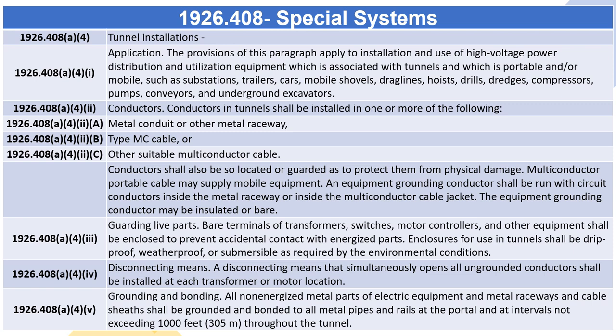1926.408(A)(4)(ii) — Conductors. Conductors in tunnels shall be installed in one or more of the following: (A) metal conduit or other metal raceway; (B) Type M-C cable; (C) other suitable multiconductor cable. Conductors shall also be so located or guarded as to protect them from physical damage. Multi-conductor portable cable may supply mobile equipment. An equipment grounding conductor shall be run with circuit conductors inside the metal raceway or inside the multi-conductor cable jacket. The equipment grounding conductor may be insulated or bare.